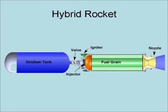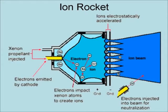Hybrid rockets are rockets in which the oxidizer is stored in a tank in liquid form, but the fuel is in a solid grain. They have much of the simplicity of solid fuel rockets with the controllability of liquid fuel rockets.